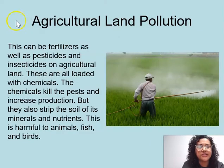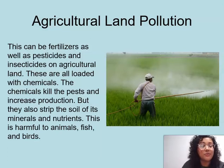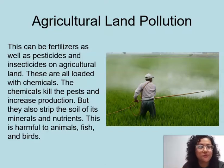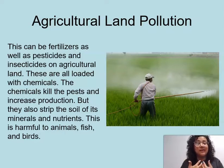The first type is agricultural land pollution. This can be fertilizers as well as pesticides and insecticides on agricultural land, and these are all loaded with chemicals. The chemicals kill the pests and they increase the production of vegetables, fruits, and any kind of crop that we're growing. But it also strips the soil of its minerals and nutrients, and this is harmful not just to humans, but to animals, fish, and birds.